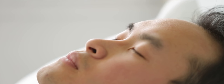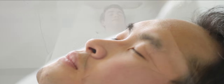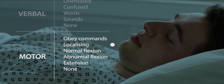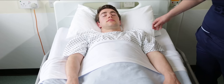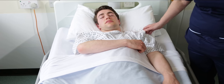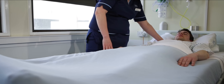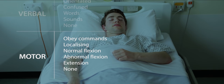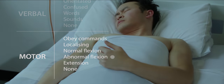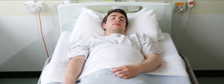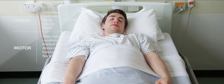This stimulus should not be used on patients with facial injuries adjacent to the supraorbital notch. If the patient moves their hand above their clavicle or collarbone in an attempt to move the stimulus away, record 'localising'. If their upper limb does not reach above the clavicle but does flex, then they are either normally or abnormally flexing. In normal flexion, the elbow bends and the arm moves rapidly away from the body and from the stimulus. In abnormal flexion, the elbow bends slowly and the arm comes across the body. If in doubt, record 'normal flexion'. If the patient extends their elbows rather than flexing them, record 'extension'.